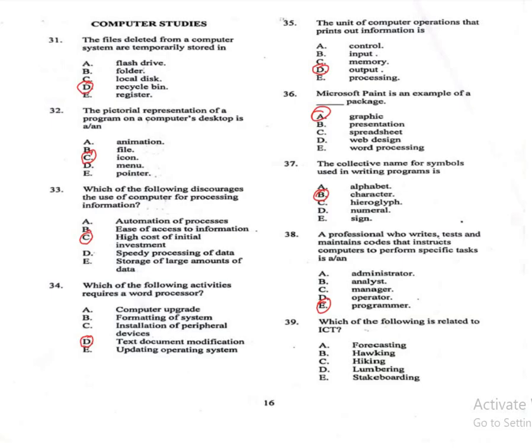Question 39: Which of the following is related to ICT? A: forecasting, B: hawking, C: hiking, D: lumbering, E: skateboarding. The correct answer is A, forecasting. Forecasting often involves data analysis, modelling, and use of ICT tools.